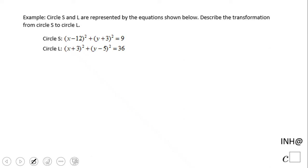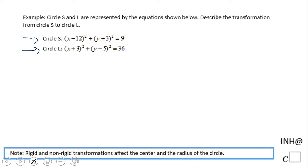Welcome back! In this example we're going to look at two circles: circle S that has the given equation and circle L. Describe the transformation from circle S to circle L. In other words, what rigid and non-rigid transformations do we have to apply to circle S to get circle L?